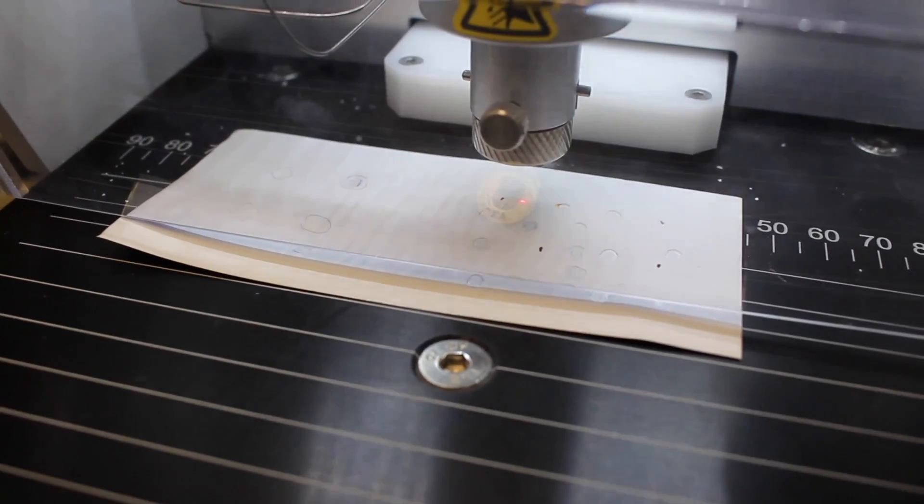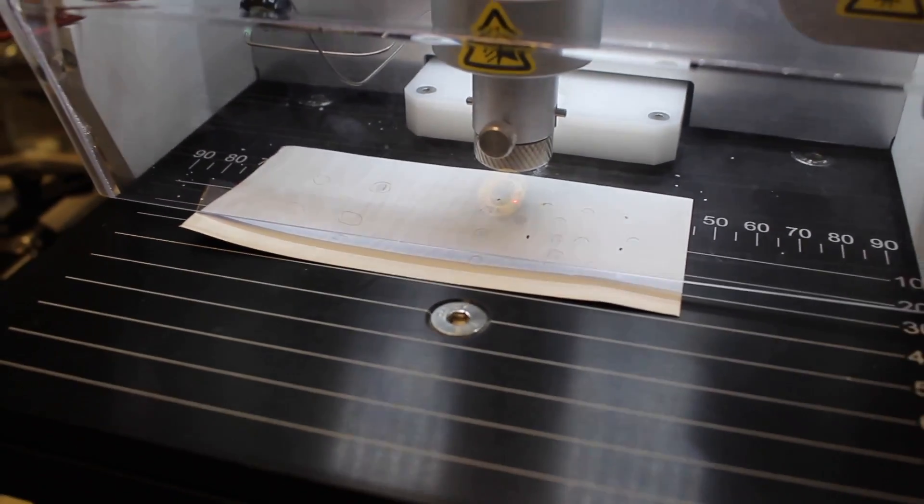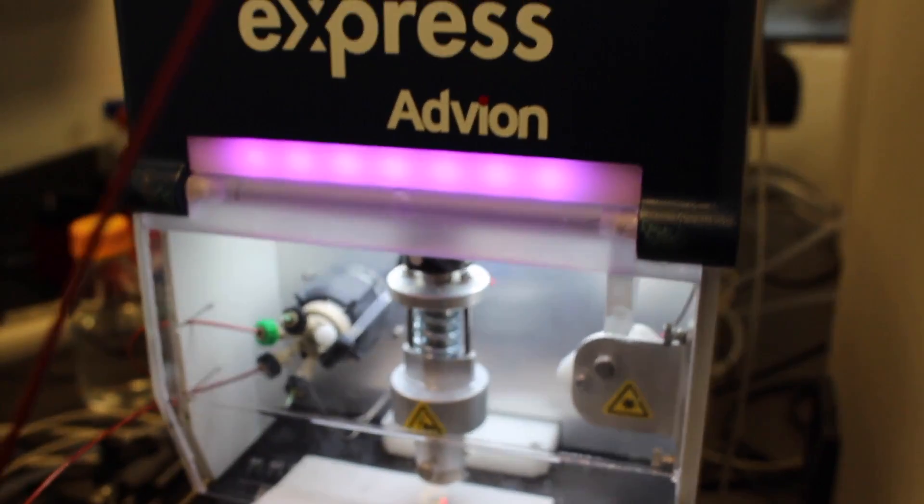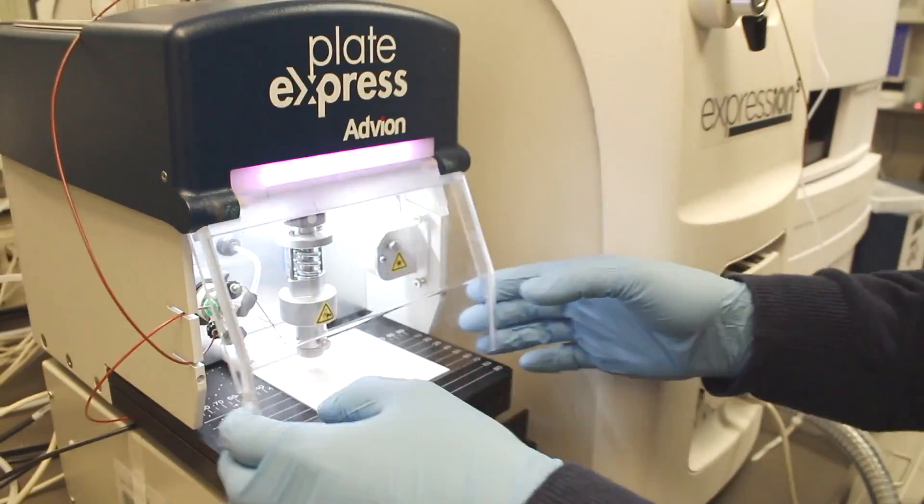It's the number one way to avoid contamination in the mass spectrometer. The TLC spot contains the ideal amount of sample for mass spectrometry, so analyzing TLC plates directly avoids overloading the mass spectrometer and decouples the separation from the analysis.